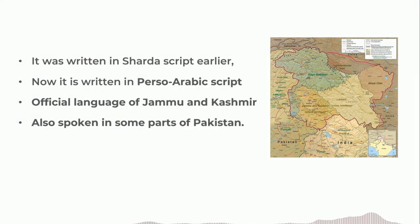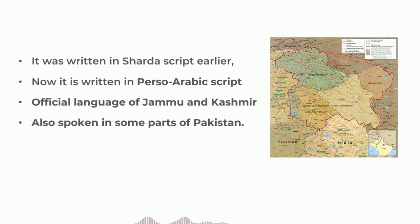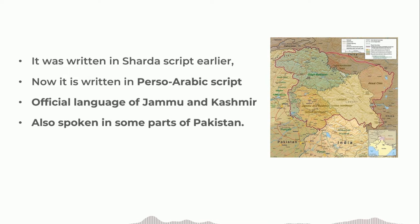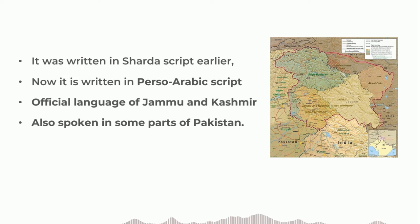Geographically, Kashmir is the northwestern region of the Indian subcontinent. This language has three scripts: Sharda script, Perso-Arabic script, and Devanagari script. However, Perso-Arabic script is the official script in Jammu and Kashmir. This language is also spoken in some parts of Pakistan, but it's mainly spoken in Jammu and Kashmir Union territory of India.